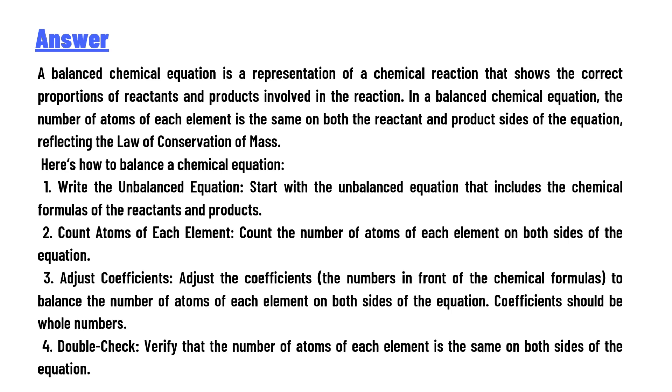3. Adjust Coefficients - Adjust the coefficients (the numbers in front of the chemical formulas) to balance the number of atoms of each element on both sides of the equation. Coefficients should be whole numbers. 4. Double-Check - Verify that the number of atoms of each element is the same on both sides of the equation.